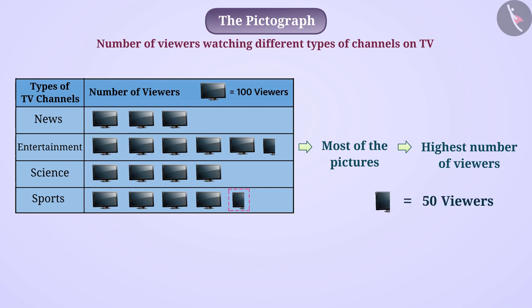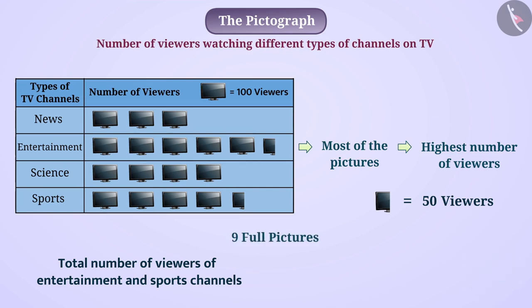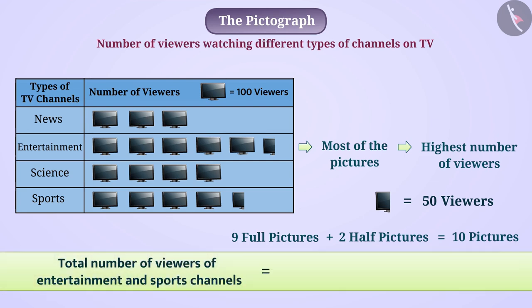Can you tell us the total number of viewers of the entertainment and sports channels? Think! A total of 9 full pictures and 2 half pictures, that is 10 pictures, have been shown for entertainment and sports channels. In this way, the total number of viewers of these channels will be 10 multiplied by 100 viewers, which equals 1000 viewers.